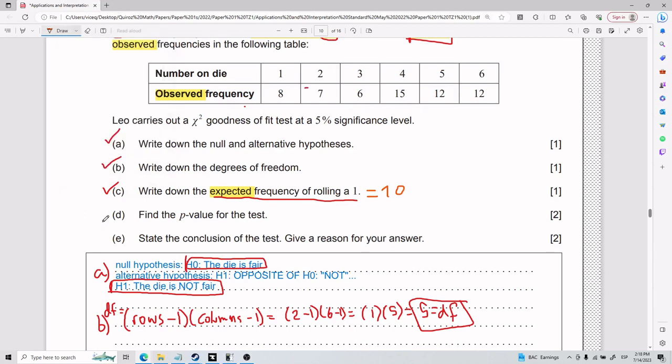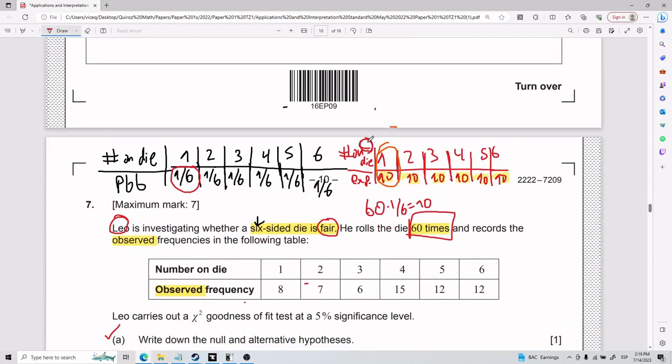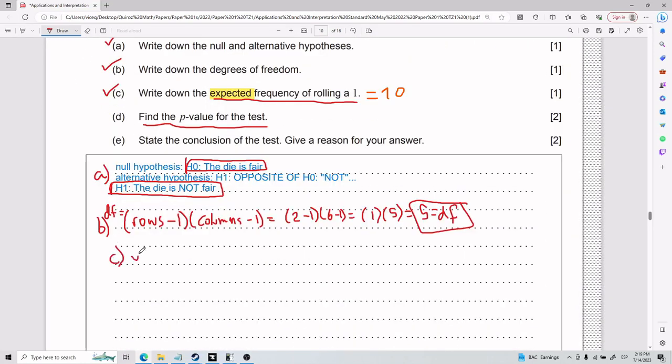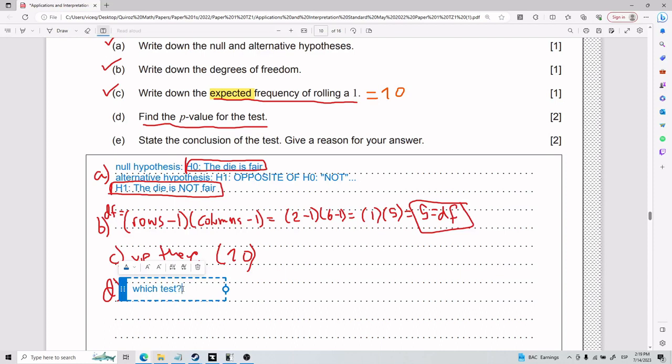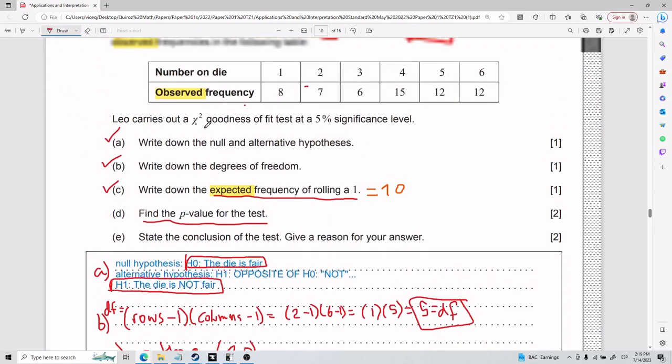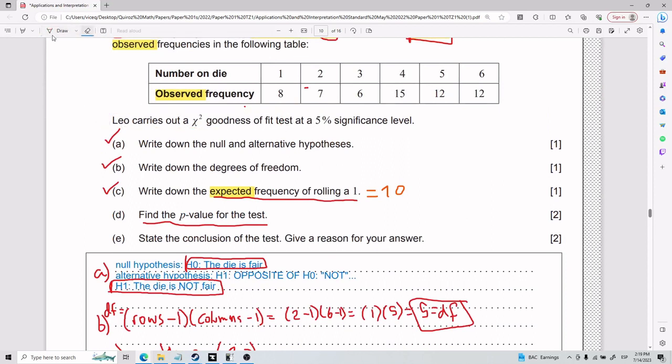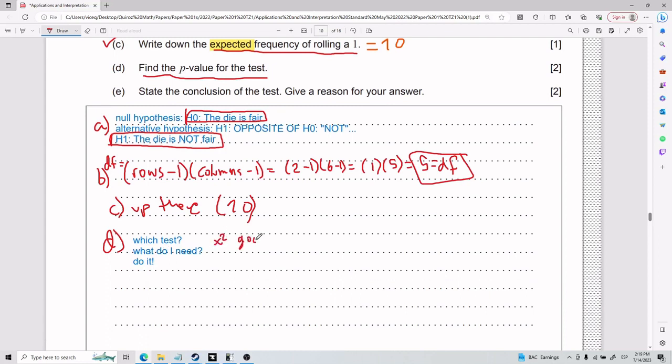Now we get to the juicy part. Now we get to the part where we say, find the p-value for the test. Now we got to do the hardcore stuff. So which test? I know it might sound kind of duh, a bit of which test. Now for part D, find the p-value of the test. So first thing you need to ask yourself is which test? Then you need to say, what do we need? And then you just do it.